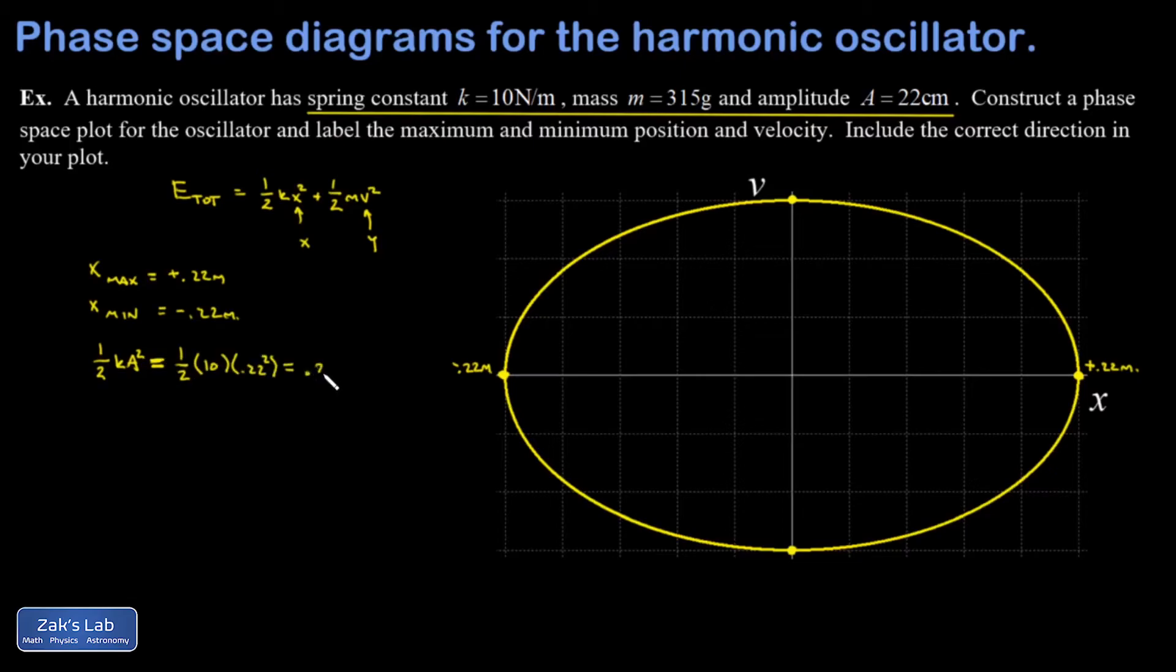That gives me a total energy of 0.242 joules. To find my maximum speed, I'm going to consider the moment where the mass is passing through the equilibrium position so that there's no spring potential energy. At that point, all the energy is kinetic, and I'll get my maximum speed.